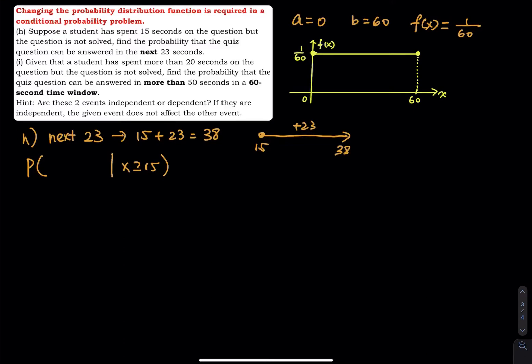Or I can say the question like this. Find the probability that the quiz question can be answered in less than 38 seconds. So this will be probability X less than or equal to 38. Is the equal matter? The answer is no, because X is a continuous random variable.